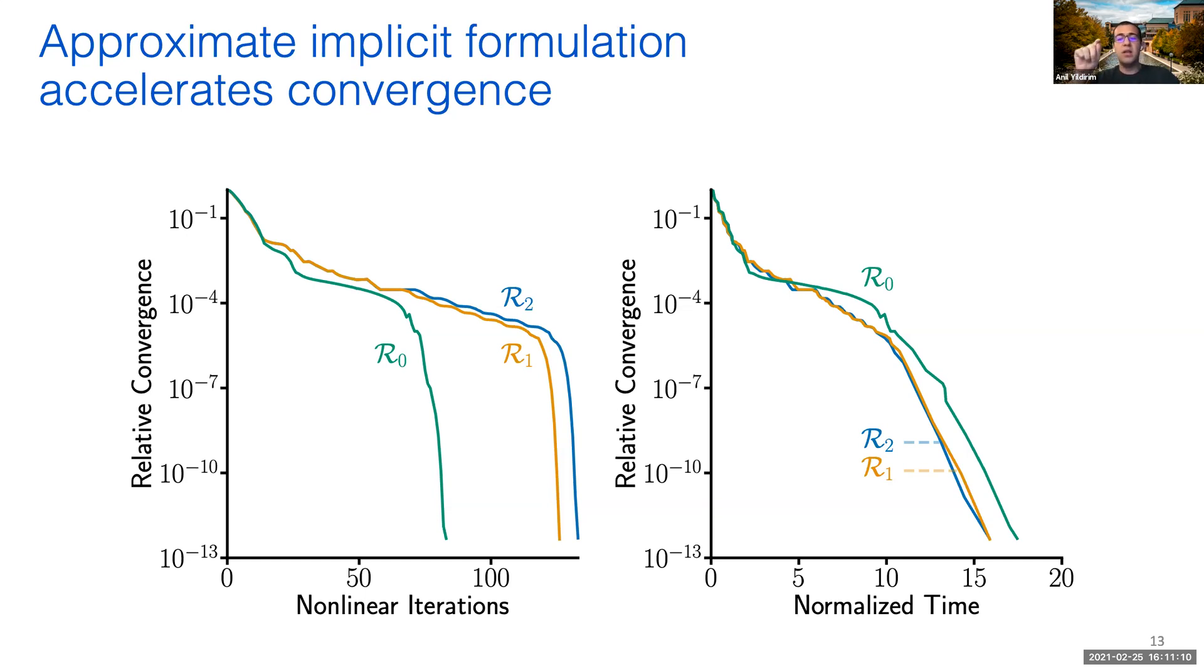However, the figure on the right shows the convergence of the same three cases with respect to wall time. In this case, the approximate R1 and R2 cases actually ended up converging faster than the more accurate Jacobian. This is due to two effects. First, the approximate routines themselves include fewer terms to compute, so each linear iteration ends up being faster. Secondly, because the linear systems are more diagonally dominant with the approximate Jacobians, they are easier to solve. As a result of these two effects, the approximate variants ended up converging faster than the full Jacobian.